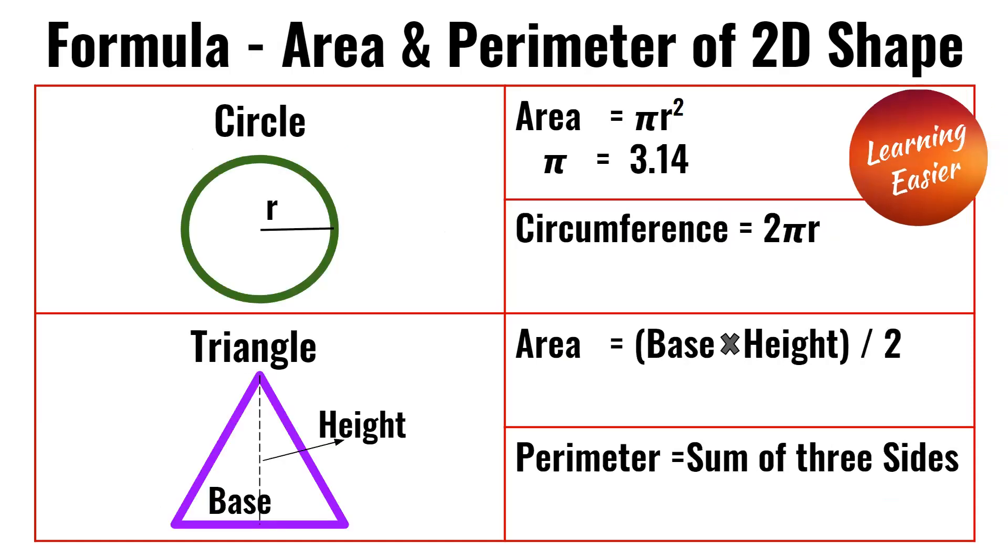For the circle, the area is pi r squared. Pi is equal to 3.14, and the circumference is 2 pi r.